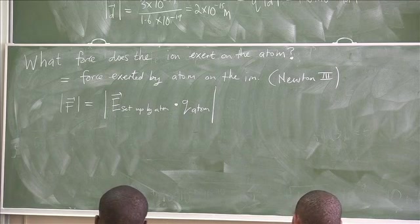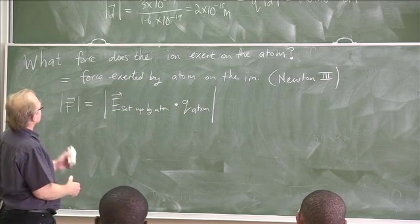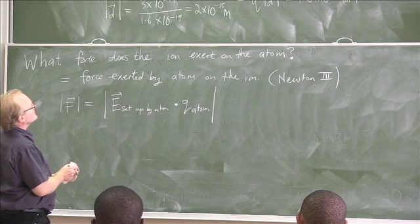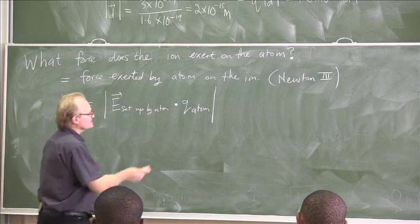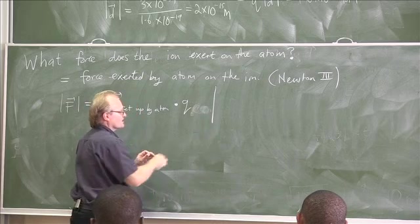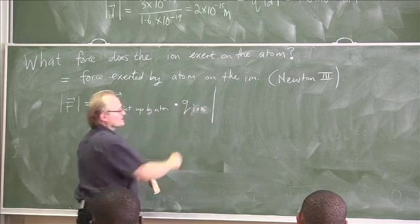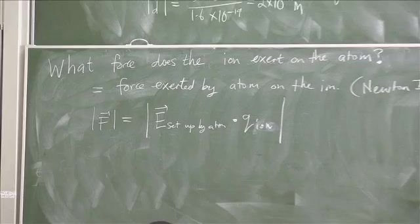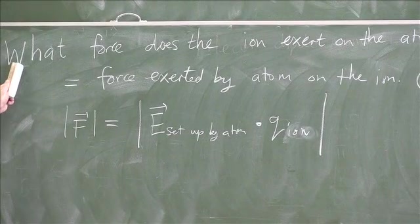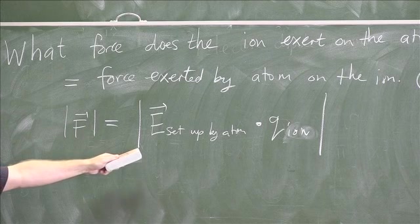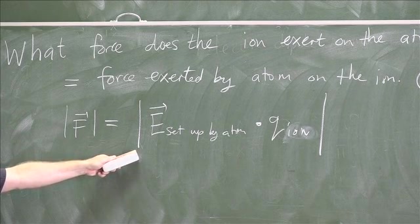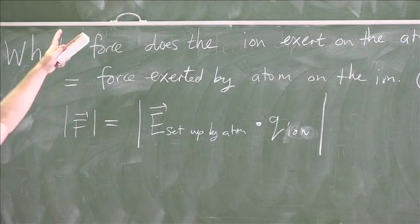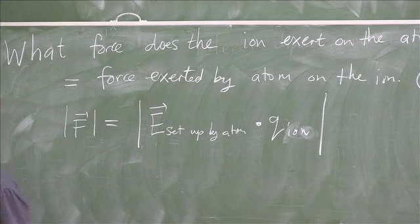Let me change the notation a little bit — I was mixing up a few things. What force does the ion exert on the atom equals the force exerted by the atom on the ion. I'm using Newton's third law. Now, the electric field set up by the atom is an electric field set up by a dipole, and we know the field set up by a dipole.